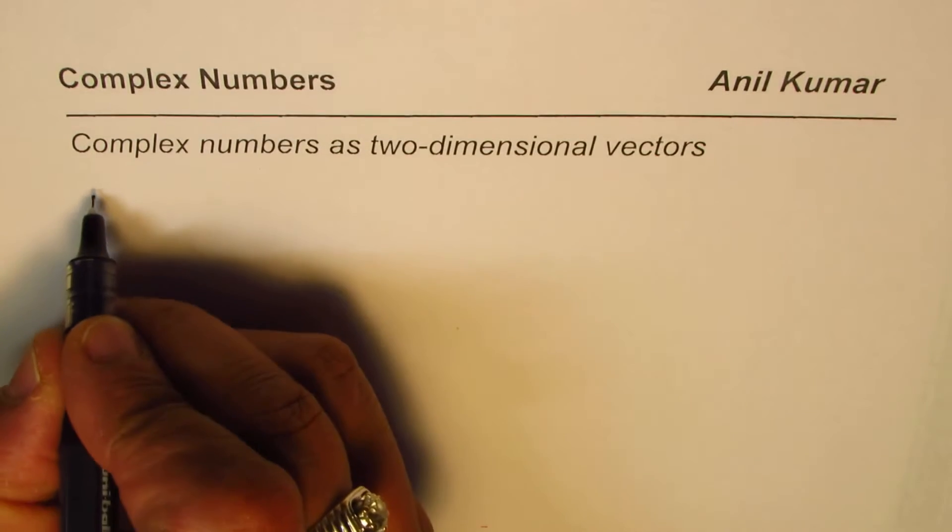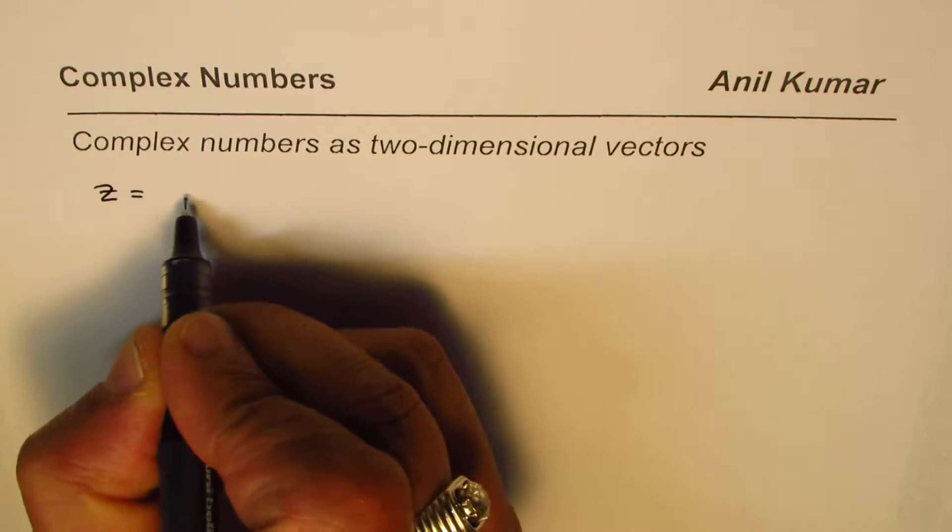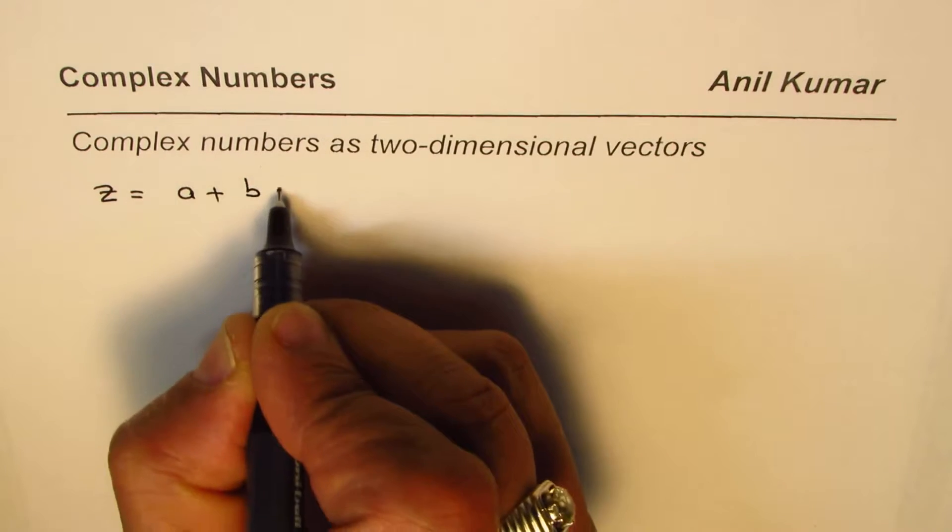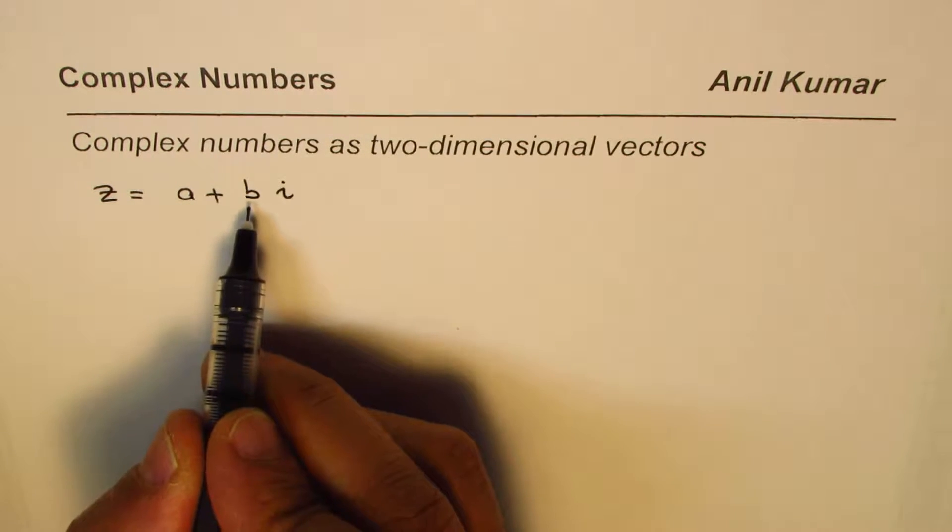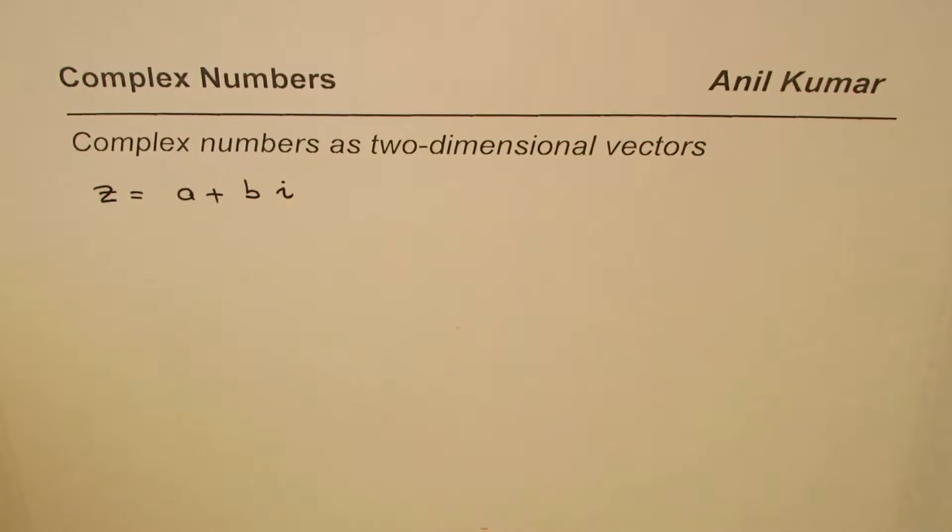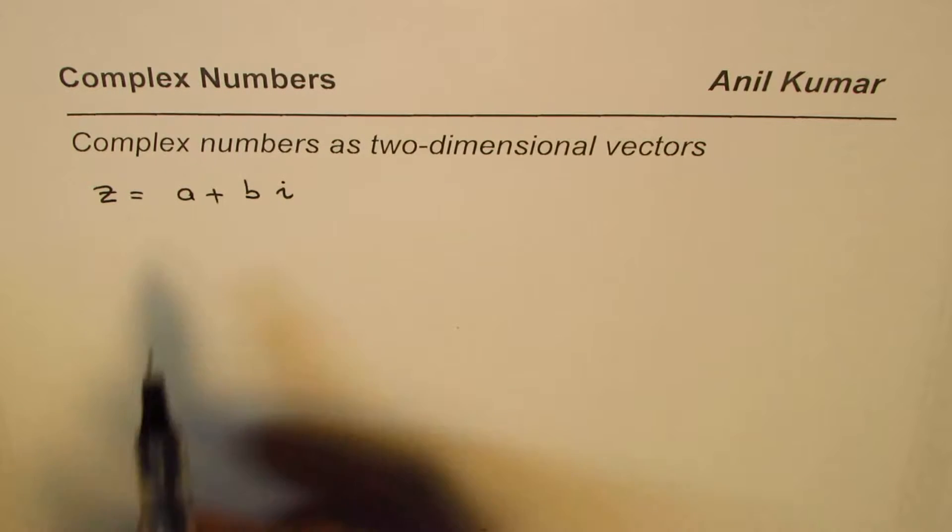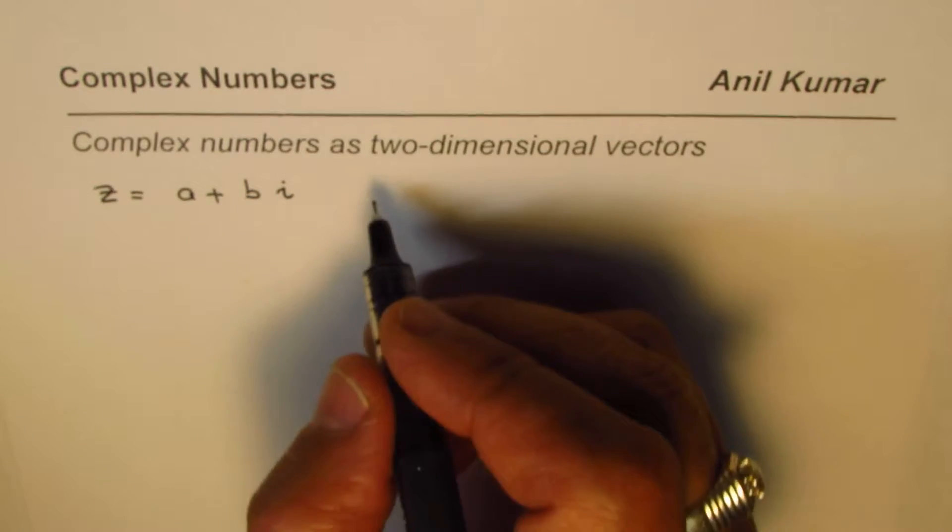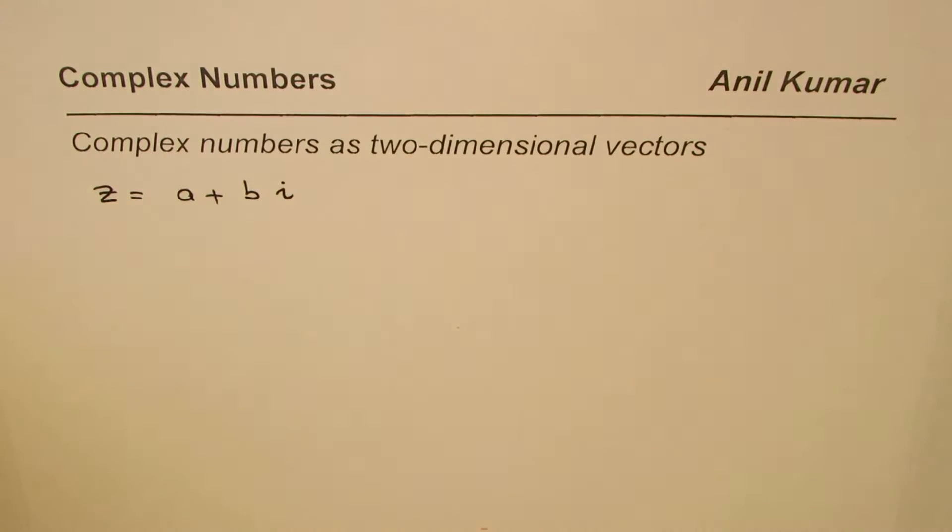Well, you can always represent a complex number as a plus bi where a is the real part and b is the imaginary part. Now you could also represent them on a coordinate plane. So you can have it on the coordinate plane as an ordered pair also.